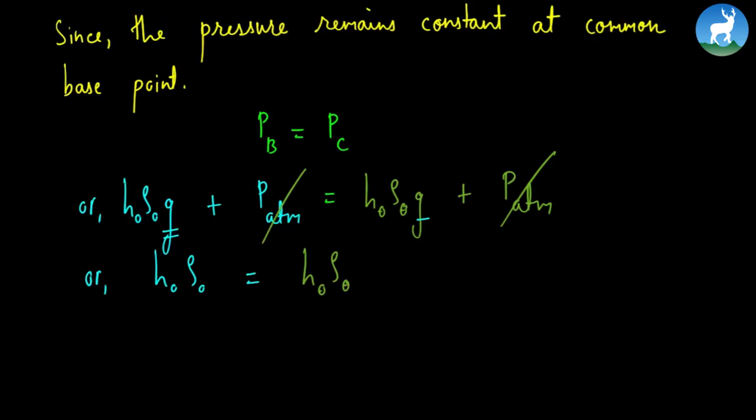The value of ρ_θ is ρ₀ divided by 1 plus gamma delta theta.